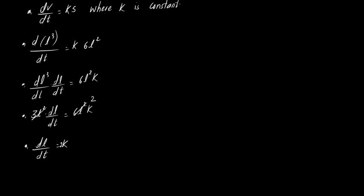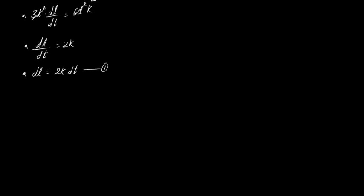So dL/dt = 2k, which means dL = 2k dt. Now integrating both sides: the integration of dL equals the integration of 2k dt, giving L = 2kt + C.